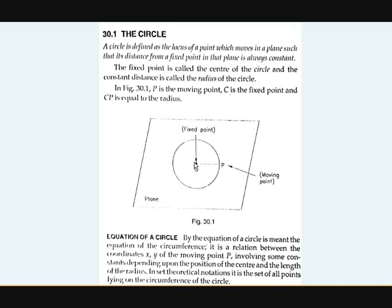Now, what is the equation of a circle? The equation of a circle means the equation of the circumference which denotes the point P, which is at a fixed distance from C. We can define it as the equation of the locus of P with the condition of fixed distance CP, which is the radius. We can use constants which depend on the position of the center and the length of the radius.